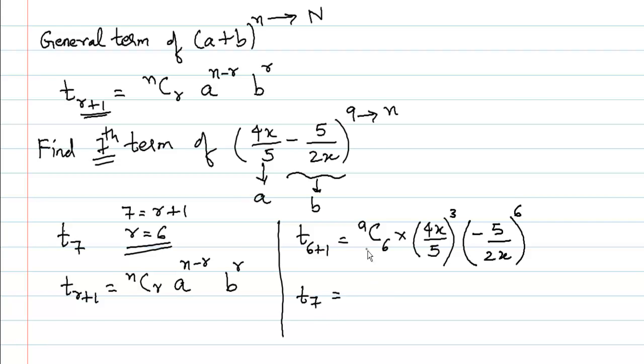So t_7 = 9C6, and we know 9C6 is the same as 9C3 because 6+3=9. We start the numerator with 9, the denominator with 3, and we have three numbers in the numerator: 9×8×7, then 3×2×1. Calculating: 3 goes into 9, 3 into 6, 2 into 8, 2 into 4, giving us 84.